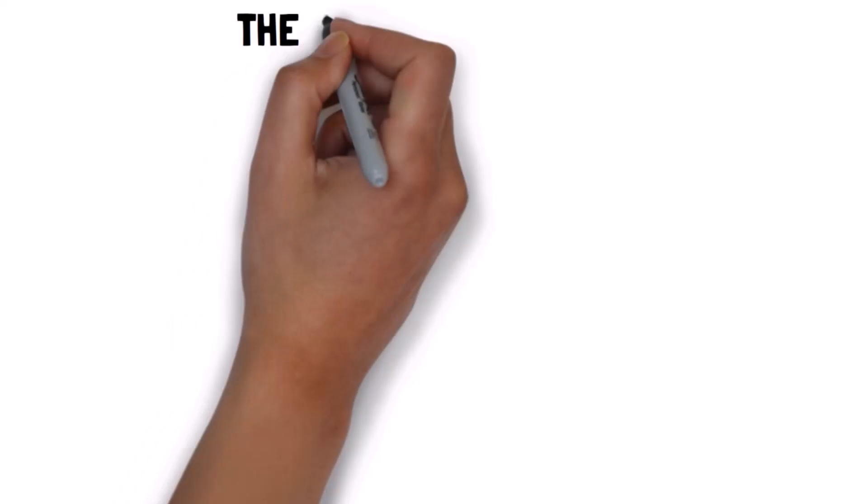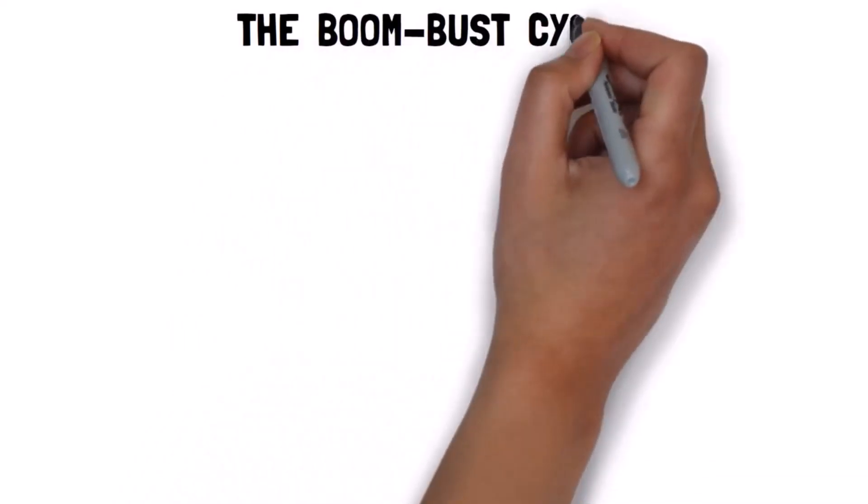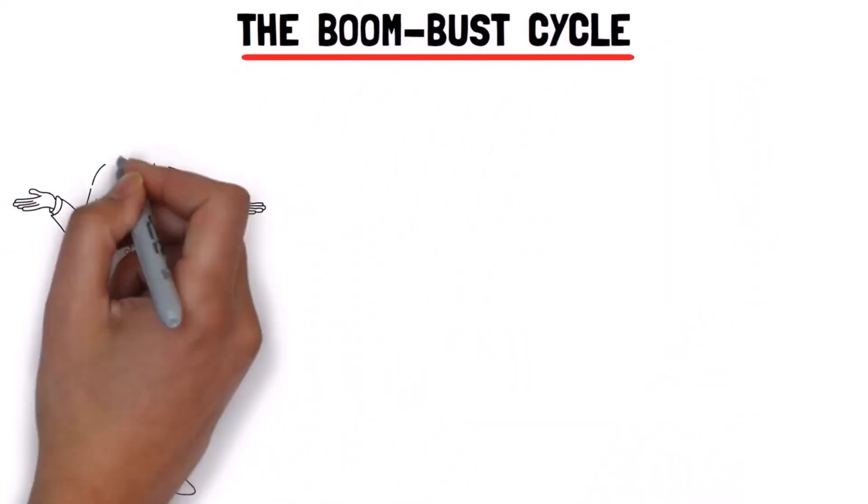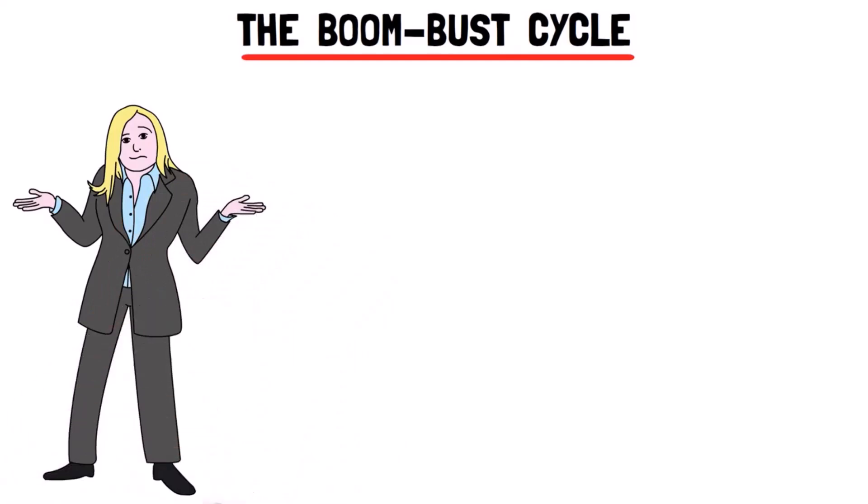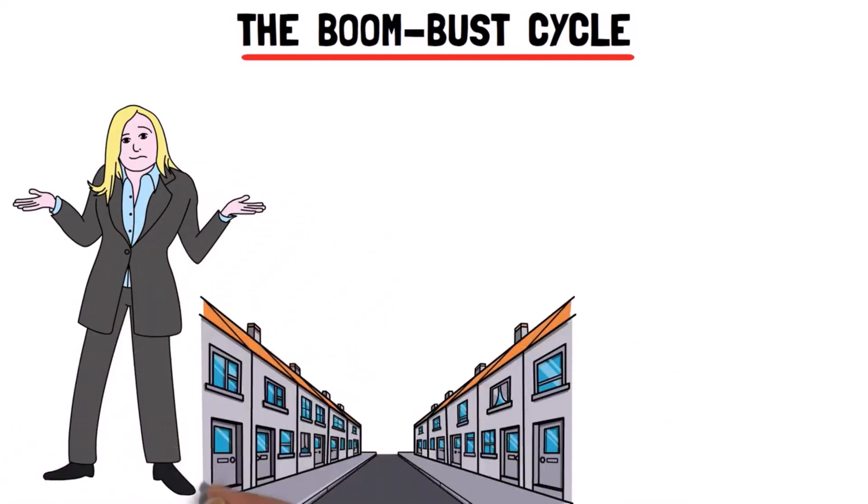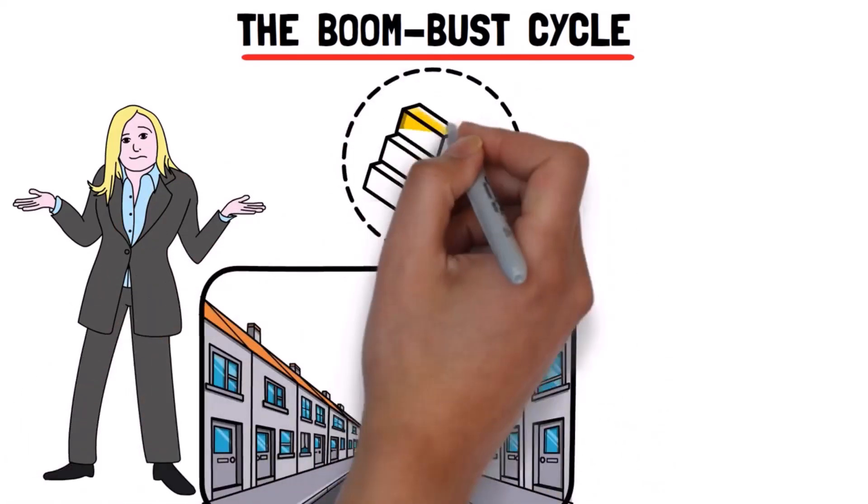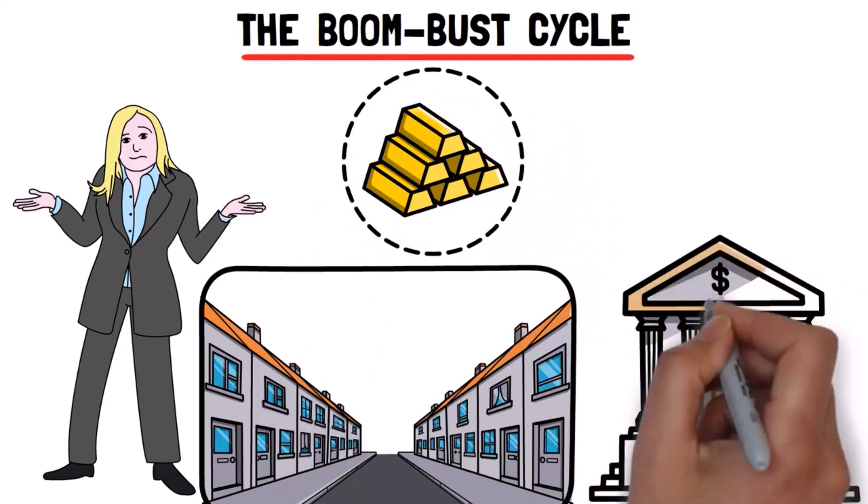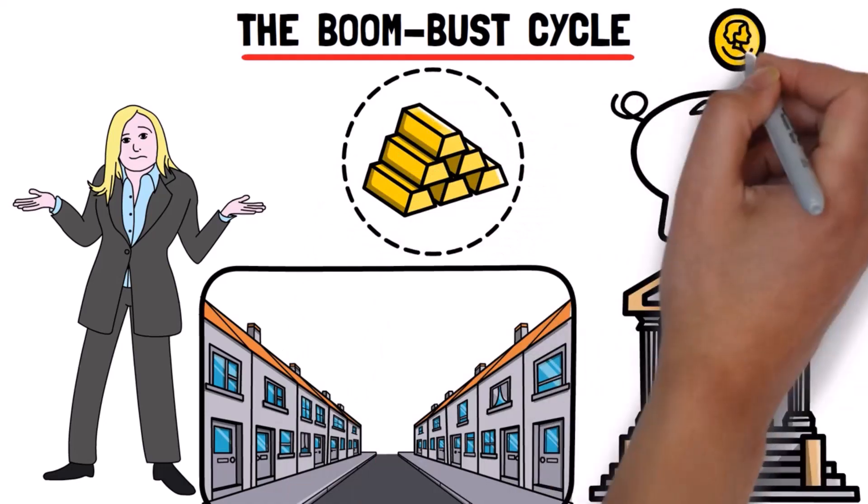So first the theory, the boom-bust cycle. Let's break it down in simpler terms. Imagine a small, self-contained town where everyone has some gold stored in a local bank. This gold represents their savings and is like their money.